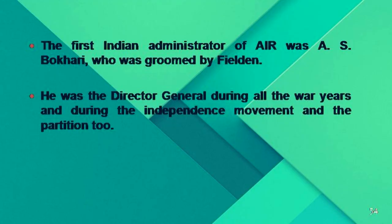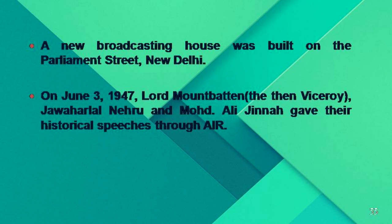The first Indian administrator of All India Radio was A.S. Bukhari, groomed by Fielding, who served as director general during the war years, the independence movement, and the partition. A new broadcasting house was built on Parliament Street in New Delhi, and on June 3, 1947, Lord Mountbatten, the then Viceroy, Jawaharlal Nehru, and Muhammad Ali Jinnah gave their historical speeches through All India Radio. This was a short but mesmerizing journey of radio.